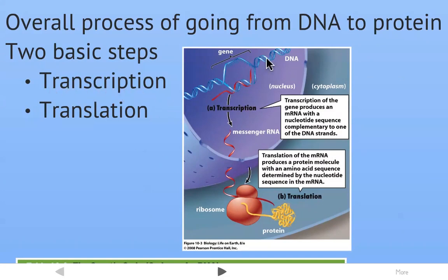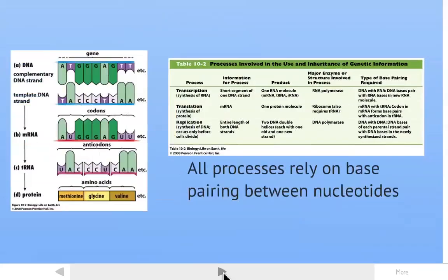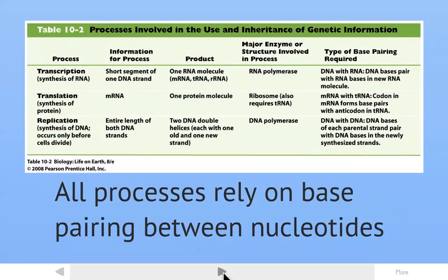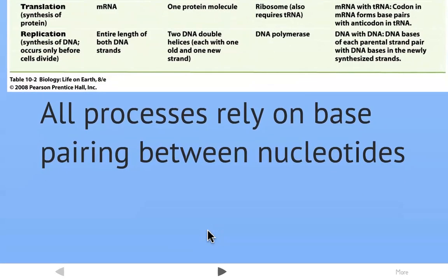Before we get into all the details, just a quick overview of the processes. Just remind you that the overall goal here is to go from the DNA, which holds the genetic information, to the protein, which is the expression of that genetic information. There are two basic steps involved here. The first will be transcription, and that is the process of going from DNA, which is here in the nucleus of a eukaryotic cell, and copying that information into a molecule of RNA.